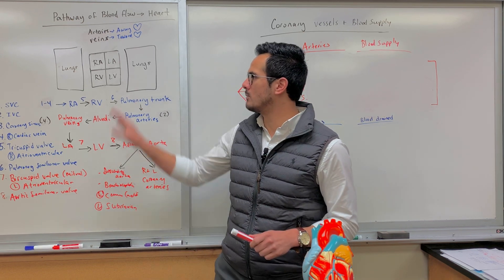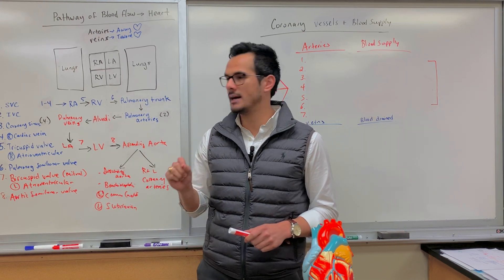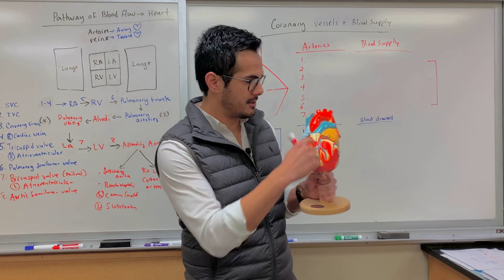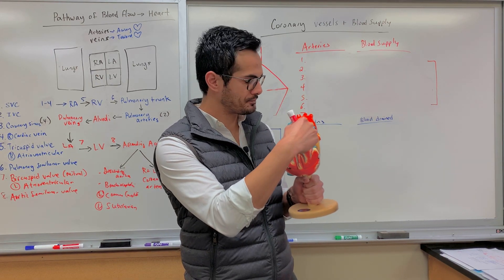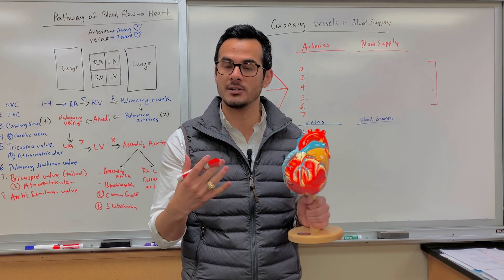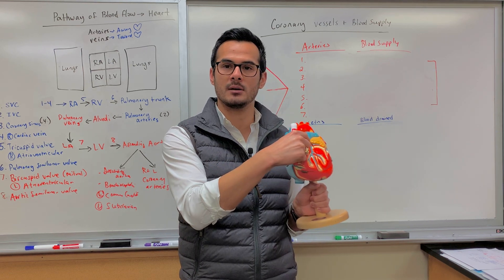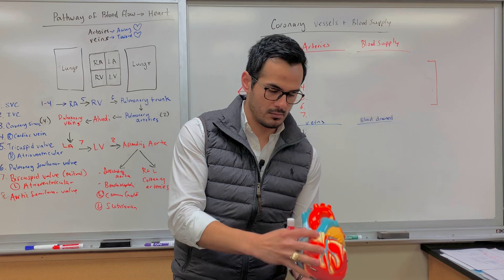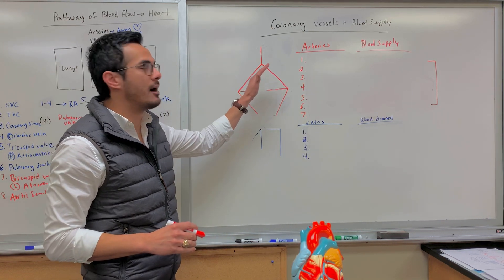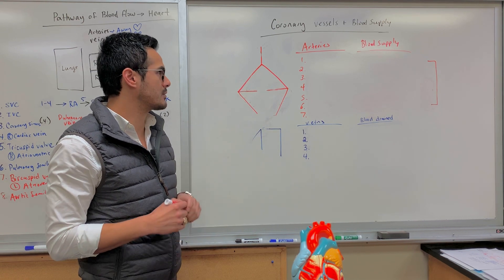In my previous lecture I went over the entire blood flow of the heart, and one thing I mentioned was coming off of the ascending aorta. So if you look at this right here, this is the ascending aorta — this is where the right and the left coronary arteries branch from. The right is on this side and the left one comes from here. What I have drawn up here is a schematic of how the blood vessels diverge and then converge as well.